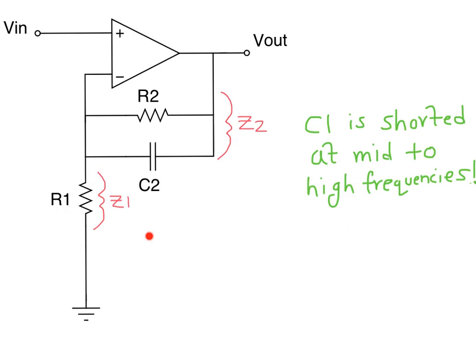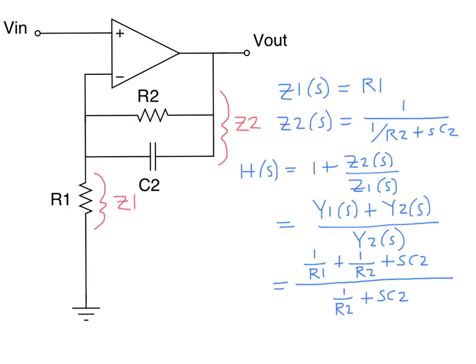So this is the circuit which is valid for high frequencies. You will notice that C1 is not present anymore — it has been replaced with a short — and C2 is back in the feedback network, that is, C2 is in parallel with R2. Using the same procedure as before, we represent the parallel impedance of R2 and C2 with Z2, and Z1 is simply R1. We then substitute the expressions of Z1 and Z2 in this equation. In order to simplify our task later, we can rewrite this expression in terms of admittance. You should recall that admittance is the inverse of impedance.